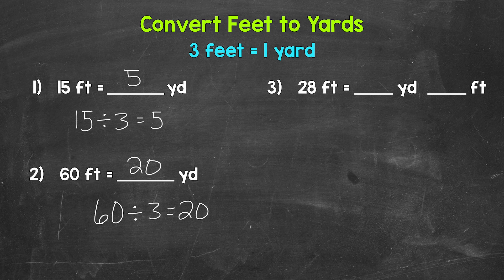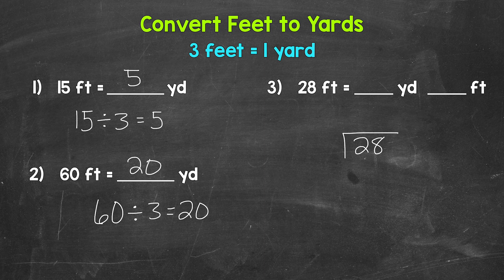Lastly, let's move on to number three, where we have 28 feet. Now this one's going to be a little bit different. We're still going from feet to yards, but we're going to have some extra feet after dividing — a remainder. Numbers one and two worked out nicely; we went from feet to just yards. But here we will go from feet to yards and feet. We're going to do the exact same thing — divide by three. So let's set this up as 28 divided by three.